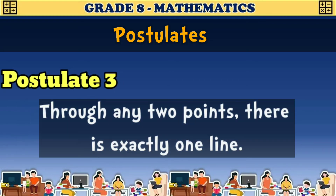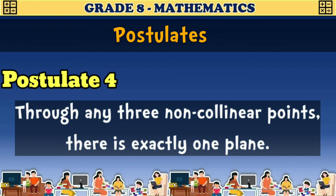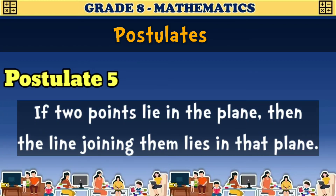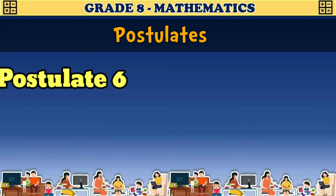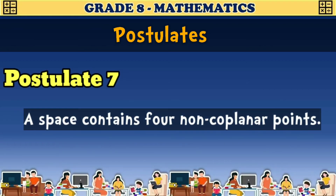Postulate 3: Through any two points, there is exactly one line. Postulate 4: Through any three non-collinear points, there is exactly one plane. Postulate 5: If two points lie in a plane, then the line joining them lies in that plane. Postulate 6: If two planes intersect, then their intersection is a line. Postulate 7: A space contains four non-coplanar points.